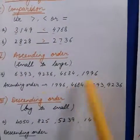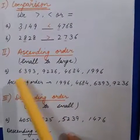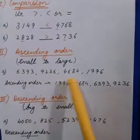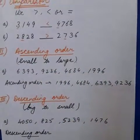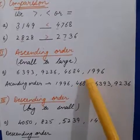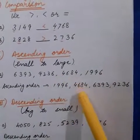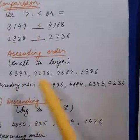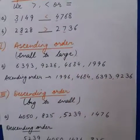This is the smallest number here. We will compare the 1000's place digits: 6, 9, 4, 1. All are different, so it is easy to write. So 1 will be smallest. So the ascending order is: 1996, next will be 4684, next 6393, then 9236.